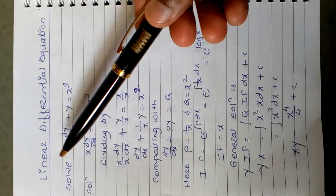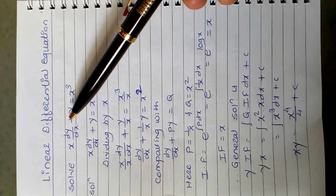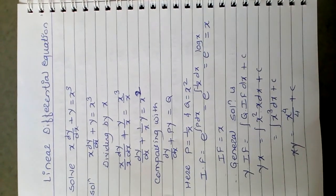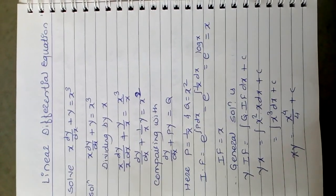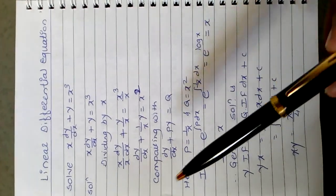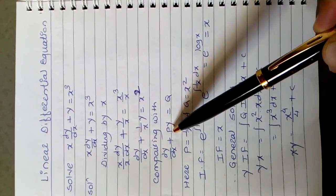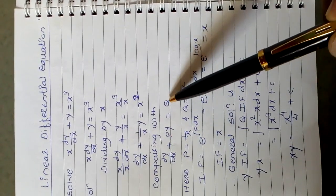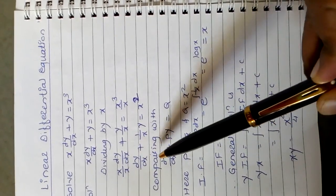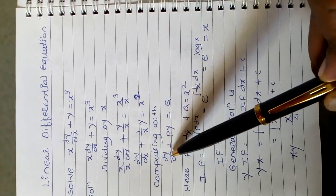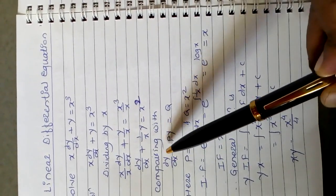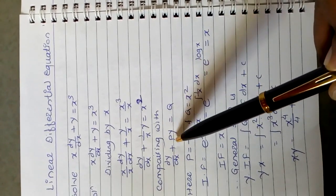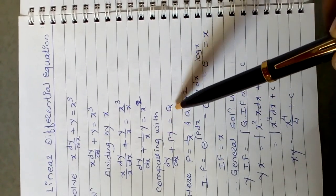Suppose that the first example is: solve x times dy/dx plus y equals x cubed. First we have to convert this equation into the standard form of a linear differential equation, that is dy/dx plus Py equals Q, where P and Q are functions. That means the first term is dy/dx multiplied by 1, plus in standard form we write plus y multiplied by a function, equals Q, which is also a function.